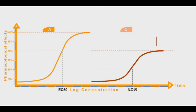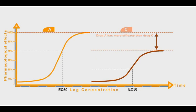Now if we compare drug A with drug C, we can clearly notice that drug A has higher efficacy than drug C. Additionally, drug A has a smaller EC50 value than drug C. Therefore, drug A is more potent than drug C.